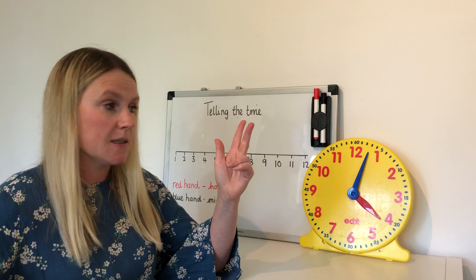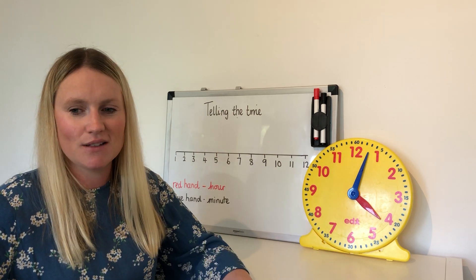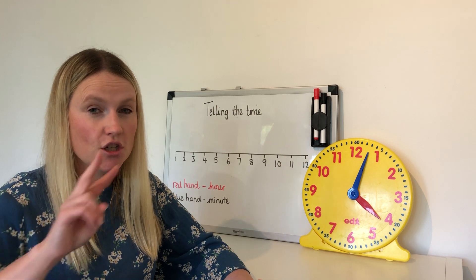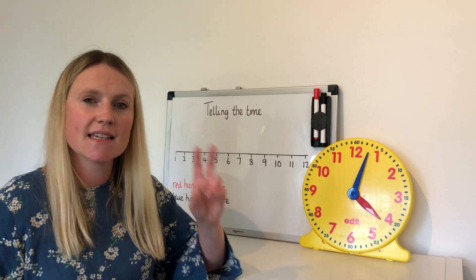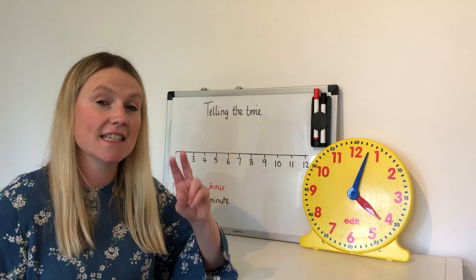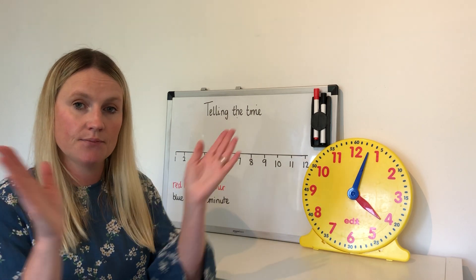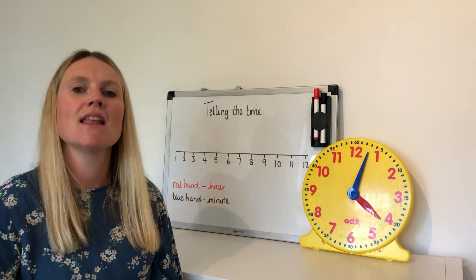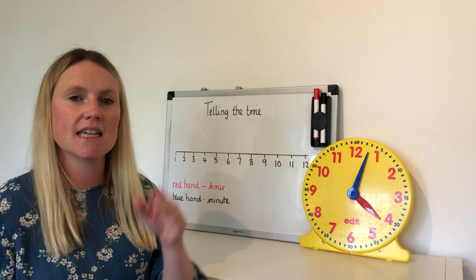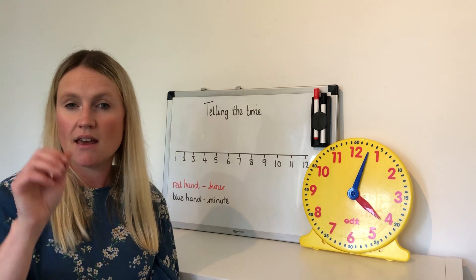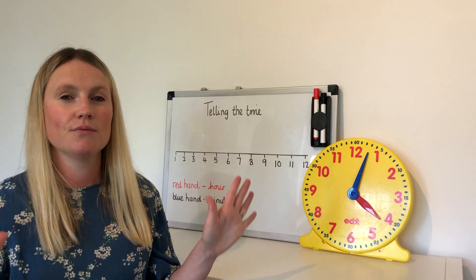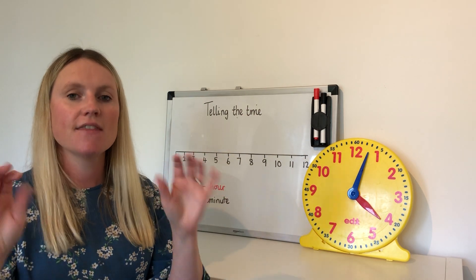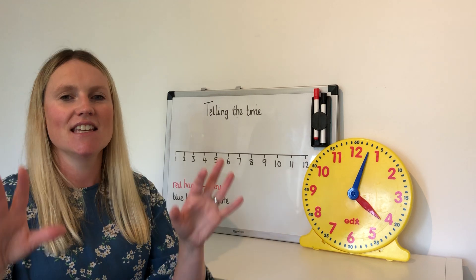Well done! Now let's do our counting in twos, fives and tens. Let's go: 2, 4, 6, 8, 10, 12, 14, 16, 18, 20. Then in fives: 5, 10, 15, 20, 25, 30, 35, 40, 45, 50. And in tens: 10, 20, 30, 40, 50, 60, 70, 80, 90, 100.